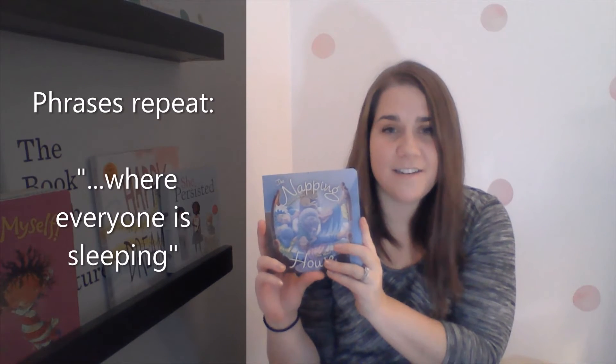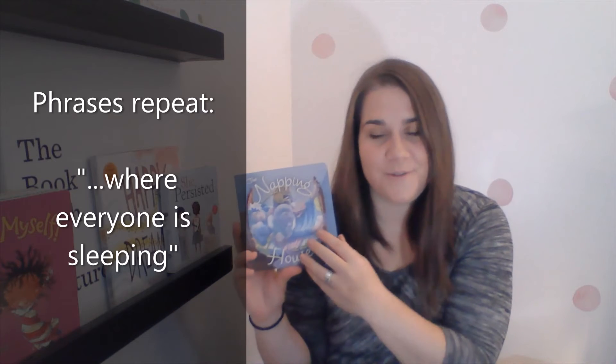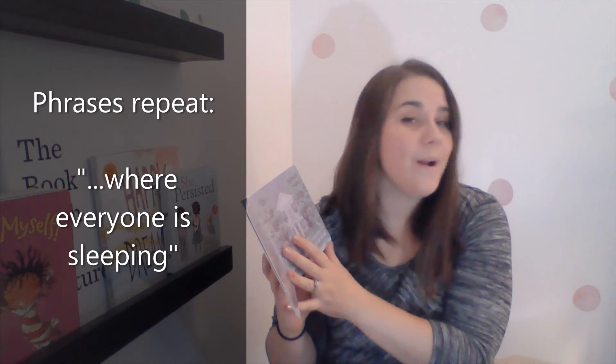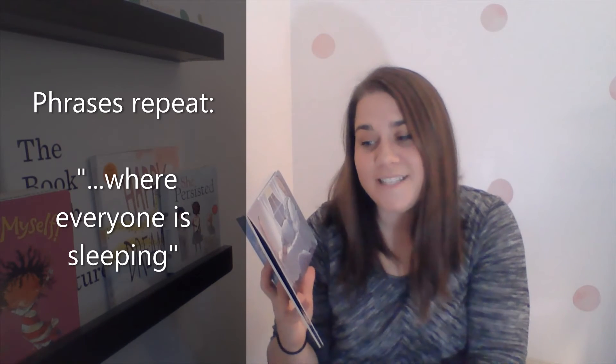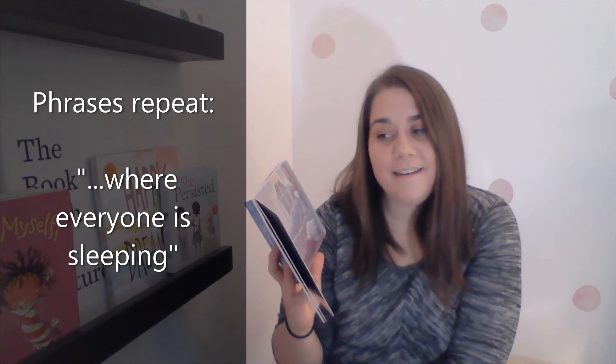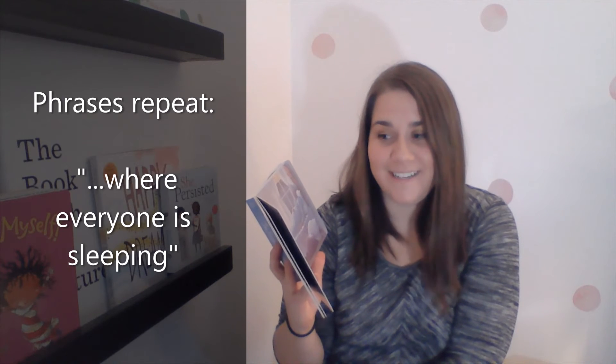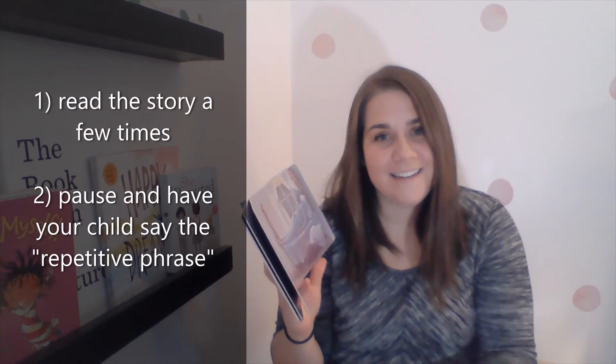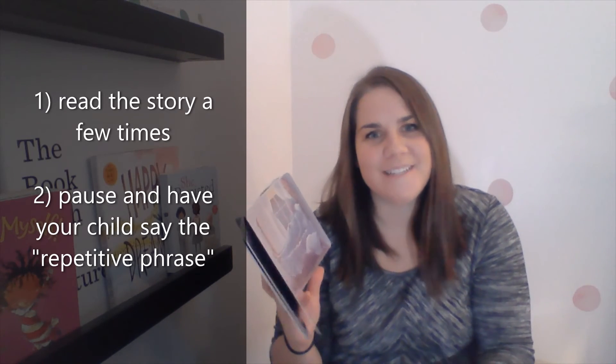Some examples are books like The Napping House. This book has a few phrases that are repeated throughout the story. For example: 'There is a house, a napping house, where everyone is sleeping. And in that house there is a bed, a cozy bed, in a napping house where everyone is sleeping. And on that bed there is a granny, a snoring granny, on a cozy bed, in a napping house where everyone is sleeping.' You can hear how the sentences build, but at the very end it's always 'where everyone is sleeping.' When you read this story a few times or over a few nights, your child may begin to remember that phrase. You could pause and have them say that part so they become involved and act like they're reading it with you.